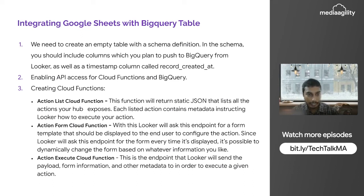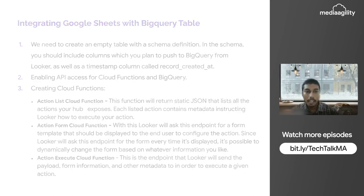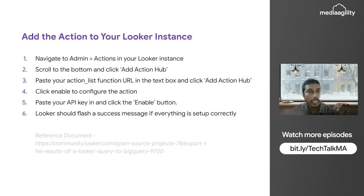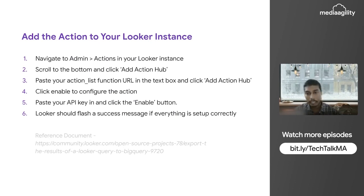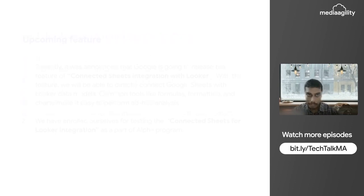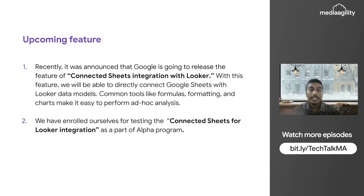The trigger URLs generated by the Action Form and Action Execute cloud functions must be supplied to the Action List cloud function to enable it to work. After successfully completing all these steps, we need to enable this in our Looker instance, and then we'll be able to send data from Looker to BigQuery.